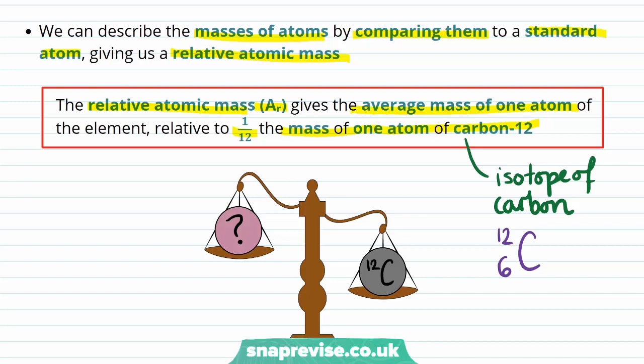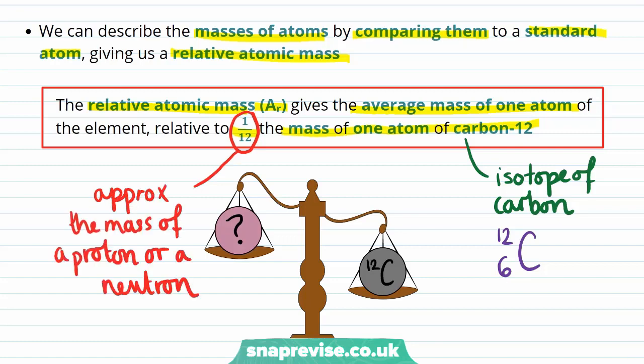As carbon-12 has a mass number of 12, we know that there is a total of 12 protons and neutrons in the nucleus of an atom of this element. As the majority of the mass of an atom is within the nucleus in the form of protons or neutrons, 1/12 the mass of an atom that contains 12 protons or neutrons is going to be approximately equal to the mass of a proton or a neutron, as protons and neutrons have essentially the same mass.